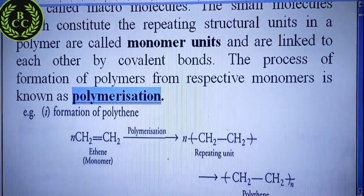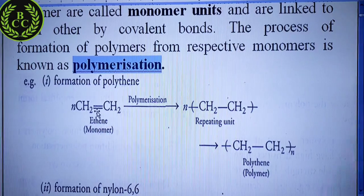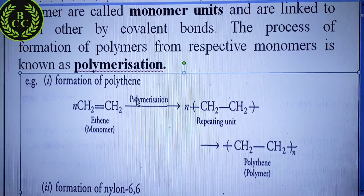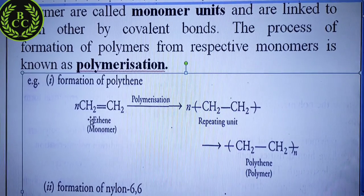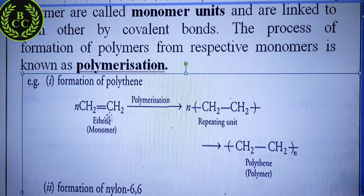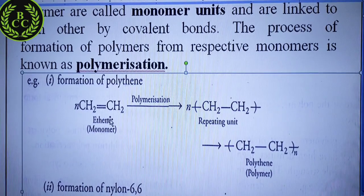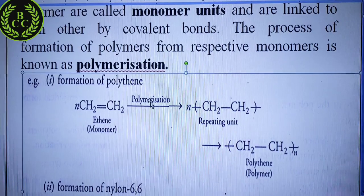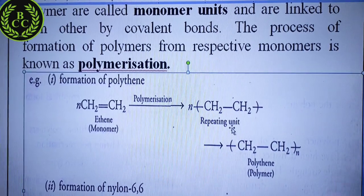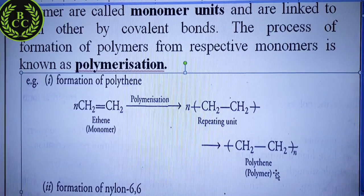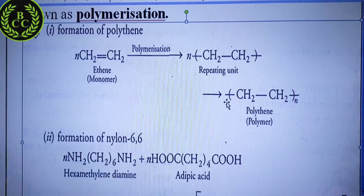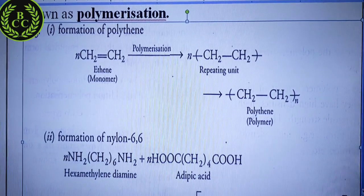For example, the formation of polythene. Polythene is a very common polymer which most of us know. The monomer unit here is ethene, which is an unsaturated compound with a carbon-carbon double bond. Ethene undergoes polymerization — we repeat it again and again to make a big molecule — and we call it polythene. So ethene is the monomer and polythene is the polymer, and this process is called polymerization.